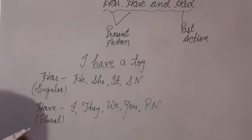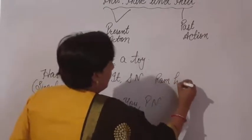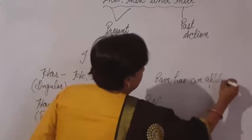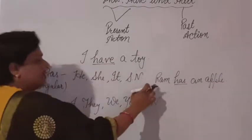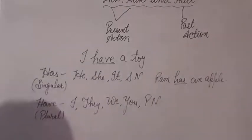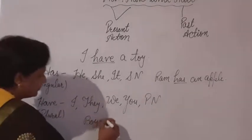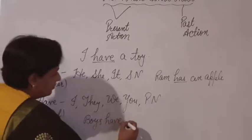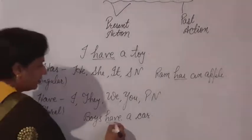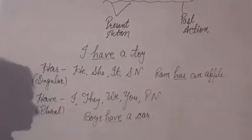I am writing an example. Ram has an apple. Here, Ram is a singular, so I use has. And in another example, boys have a car. Here, boys is a plural noun, so I use have with it.